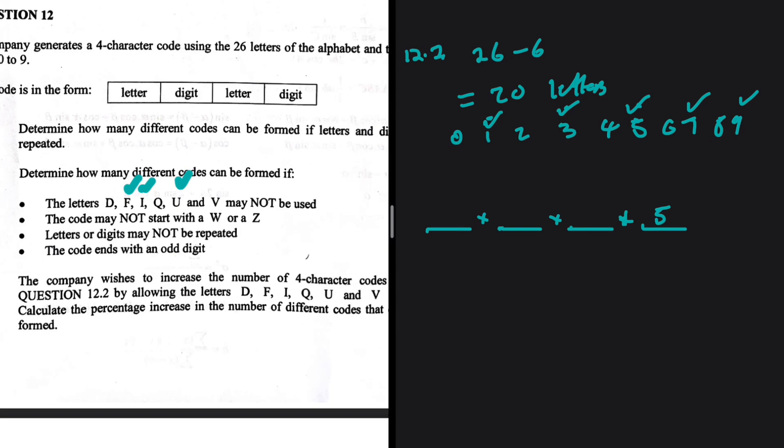Let's come to the first spot, which also has a condition. The code may not start with a W or a Z. So how many letters can possibly occupy the first spot? We have only 18 letters because we have removed six that we cannot use anymore. But of those 20 that are remaining, we have two that are not supposed to occupy the first spot, so we have 18.